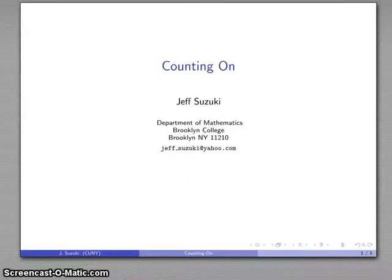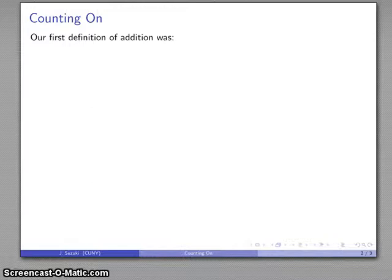So now that we have an idea of what addition is, we can lead to the question of how do you actually perform an addition. The basic algorithm for addition, which is ultimately based on the Peano postulates, is known as counting on, and this goes back to our first definition of addition from the Peano postulates.